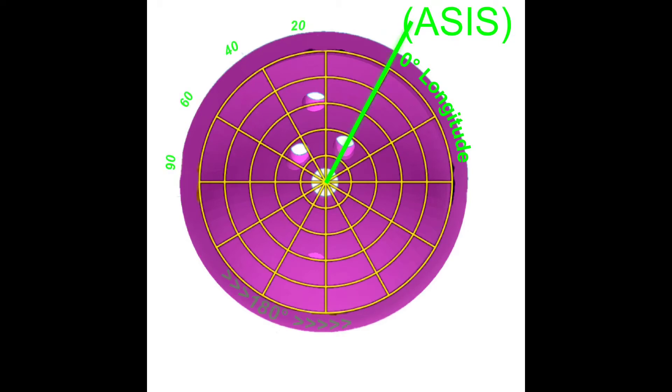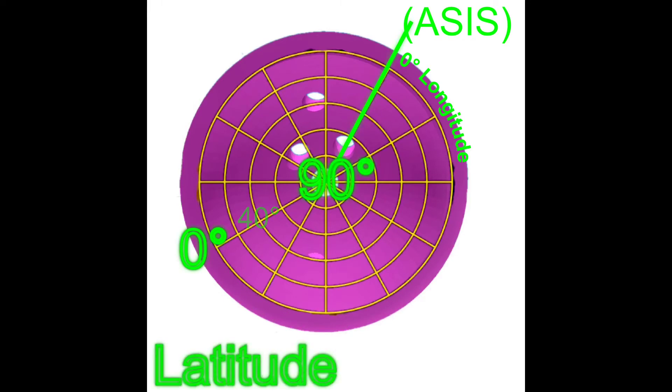Green line shows position of the anterior superior iliac spine (ASIS) where longitude value is 0 degrees. Longitude values between 0 and 360 degrees, latitude values between 0 and 90 degrees. Deepest part of cup pole at 90 degrees.